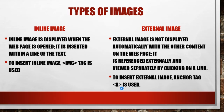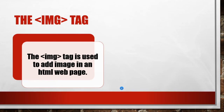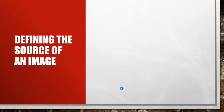The img tag is used to add an image directly in an HTML web page. It is an empty tag and requires different attributes. Since we are inserting an image, we should specify where to place it — left, right, center, top, bottom — and also the height and width of the image. These are the attributes of the img tag.